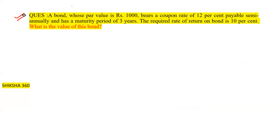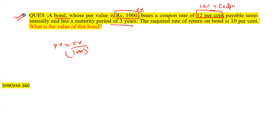So here what it says: a bond whose par value is rupees 1000, that is the face value, bears a coupon rate of 12% payable semi-annually, and has a maturity period of three years. The required rate of return on the bond is 10%. So what is the value of this bond? The formula is: present value equals future value upon (1 + r)^n plus A upon r into [(1 + r)^n minus 1] upon (1 + r)^n.